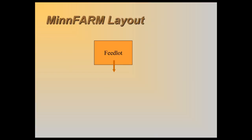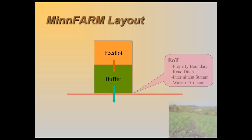To build the model, MinFarm takes account of six possible contributors in any unique livestock operation. The feedlot is any outdoor area where livestock are housed — usually concrete or dirt. Feedlots collect manure that can be washed off when it rains. This runoff will often flow across a buffer of grass or other surface before reaching a point of discharge, what MinFarm calls the end of treatment, or EOT, defined as a property line, road ditch, or intermittent waterway.